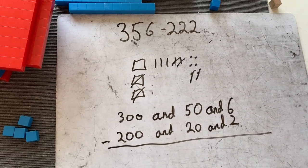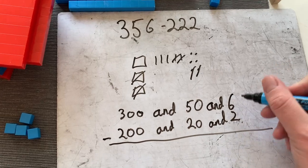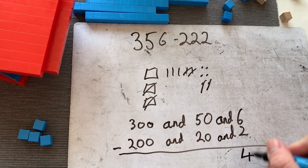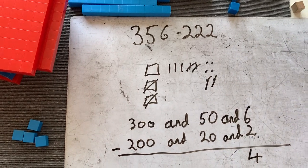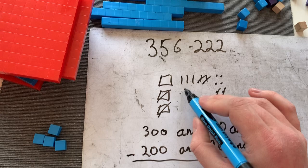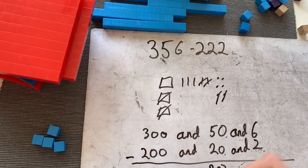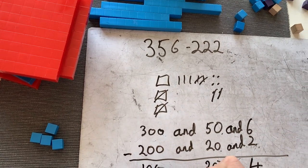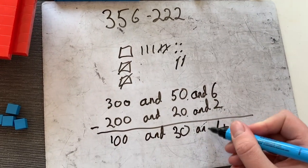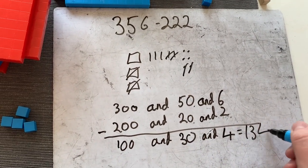Where do we start? 6 minus 2 is 4, which is what we've got here. How amazing. 50 minus 20 is 30, which is what we've got here. And then 300 minus 200 is 100. 100 and 30 and 4 is 134.